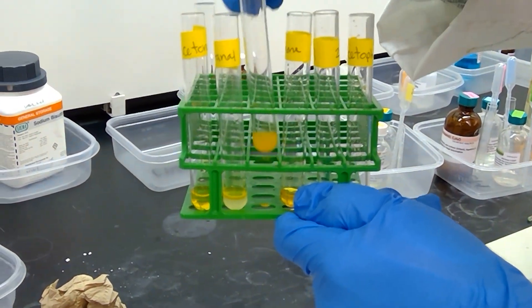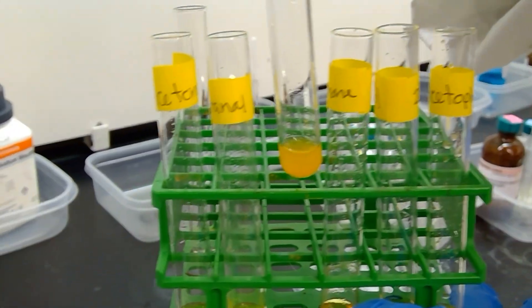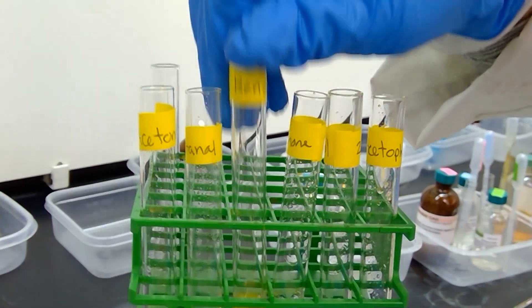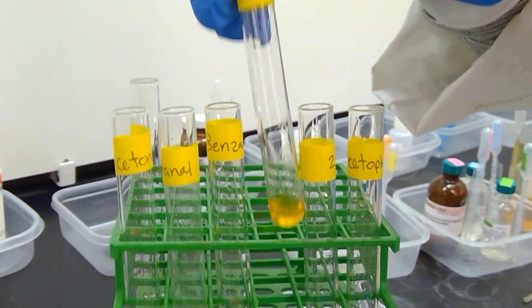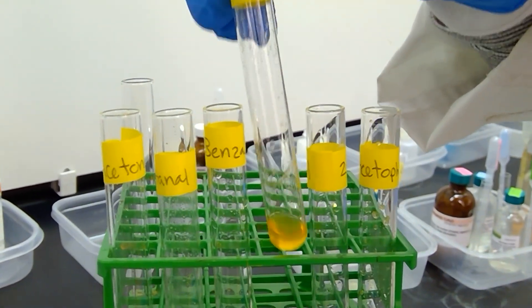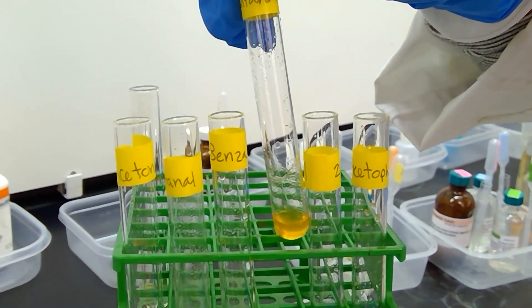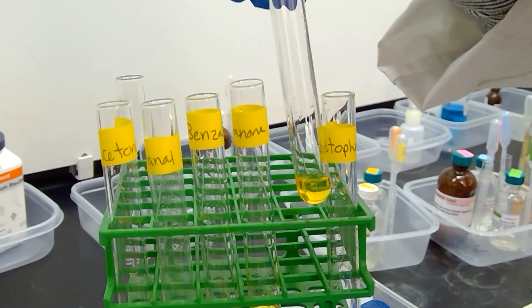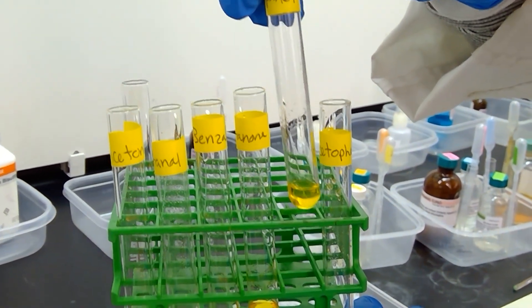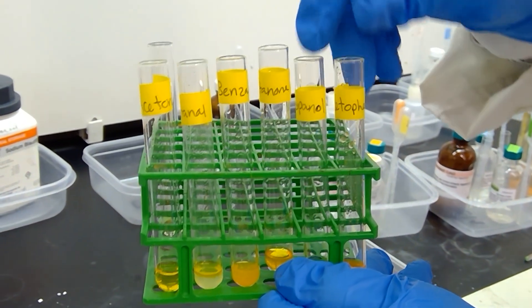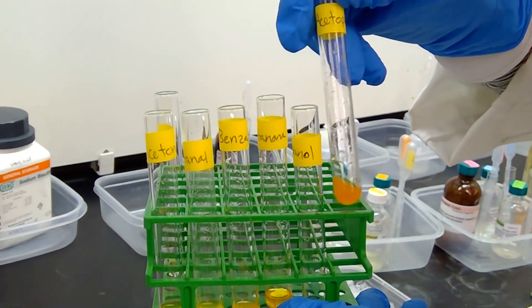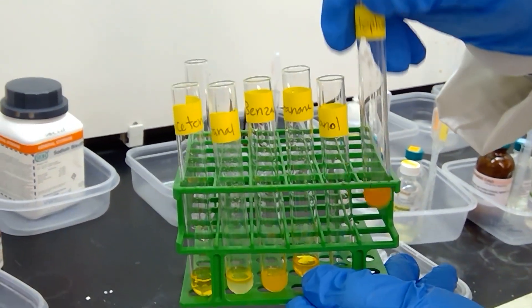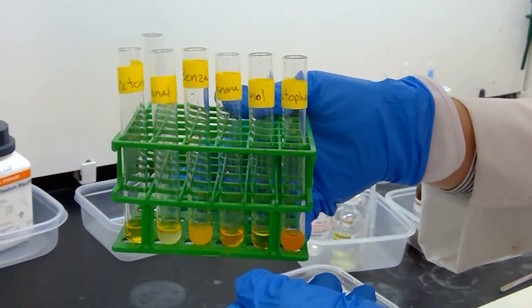For the sample of benzaldehyde, we have obvious orange precipitate forming. This one formed without warming or cooling or even scratching. Next up, we have 3-pentanone. 3-pentanone did show some orange precipitate, also without cooling or scratching. 2-propanol is an alcohol, and we don't see any solid happening in here, which we expected because it's an alcohol. And lastly, we have the ketone acetophenone, which has created some very dark orange precipitate. This has been the 2,4-dinitrophenylhydrazine test.